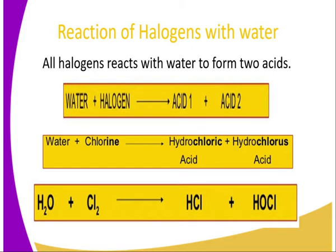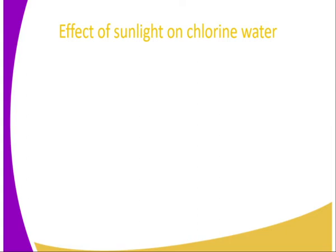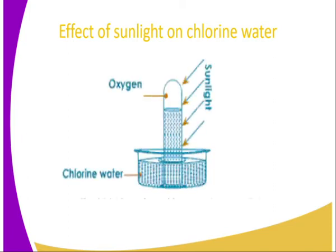Reaction of halogens with water: all halogens react with water to form two acids. For instance, water reacts with chlorine to give us hydrochloric acid (HCl) and hypochlorous acid — also referred to as chloric(I) acid. Hypochlorous acid contains active oxygen. The product of this reaction is what we refer to as chlorine water. Because hypochlorous acid contains active oxygen, it is not stable.